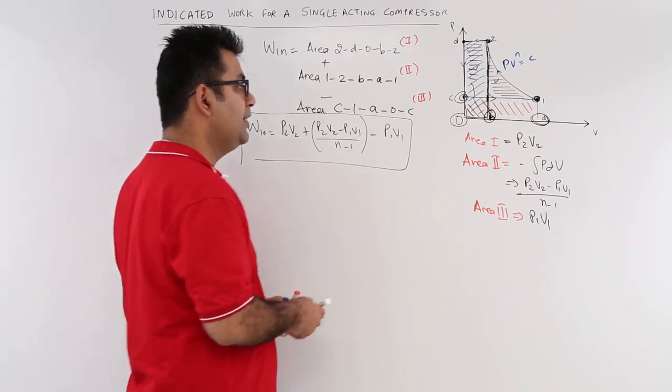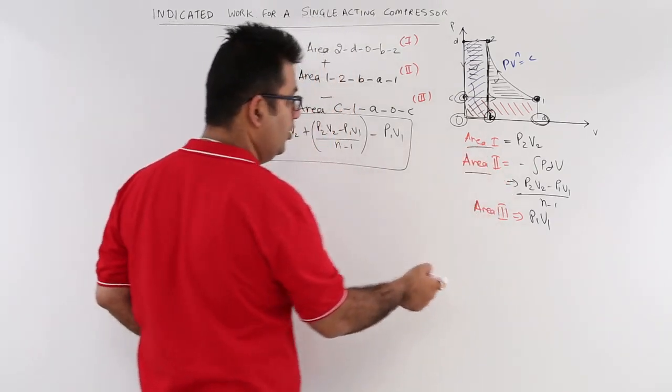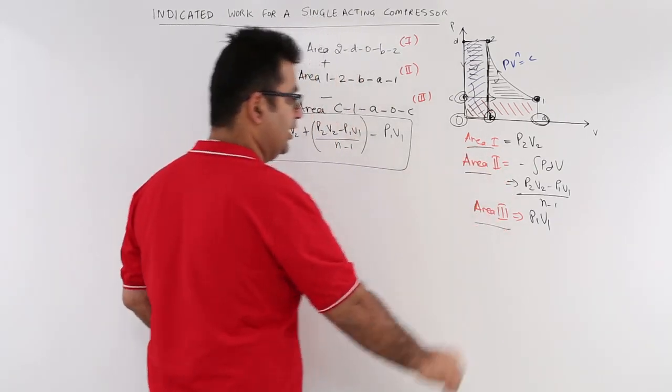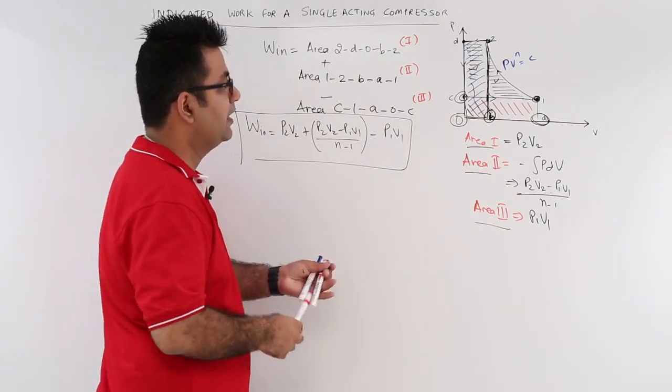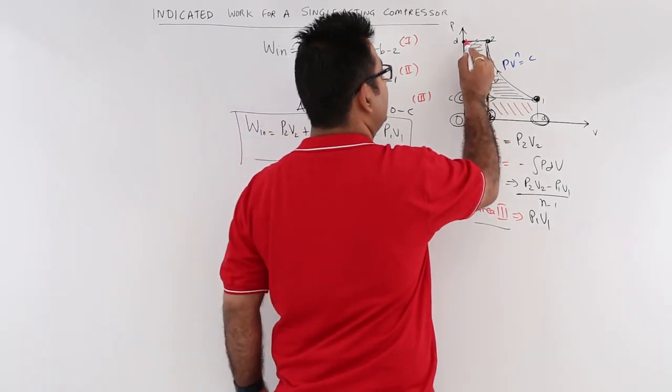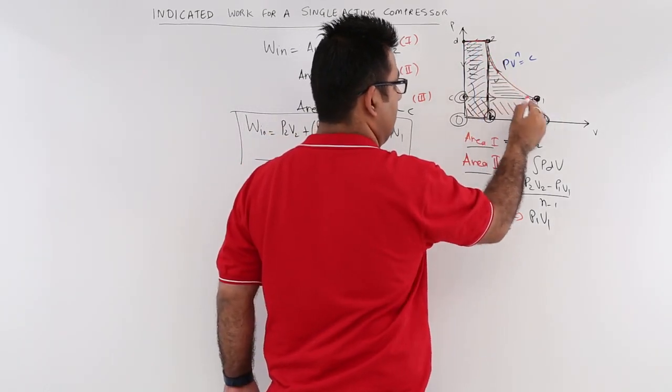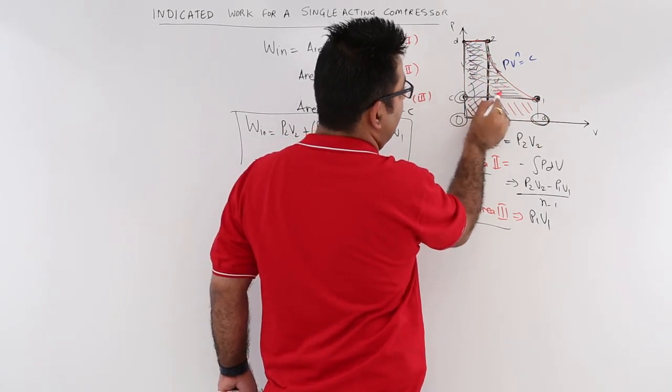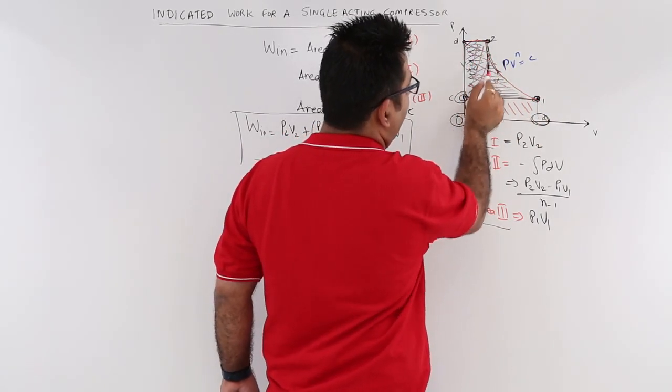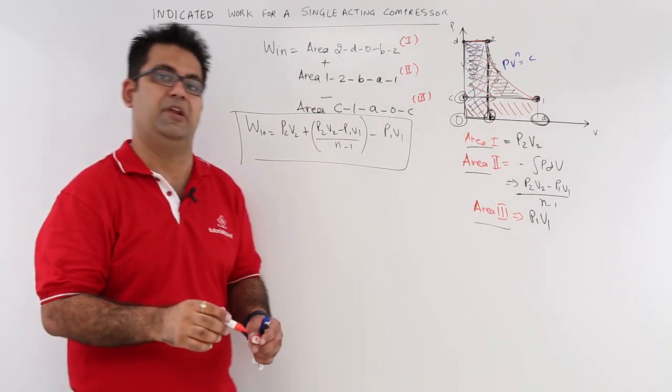That is, you need to add area 1 and area 2 and subtract area 3 from their sum. So that would give you the net space. This is the net space that you will get, which will give you the indicated work for this particular compressor.